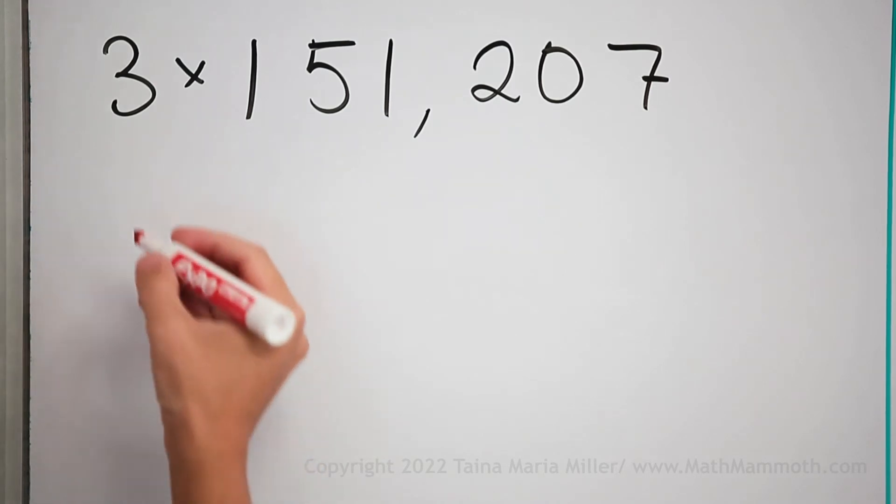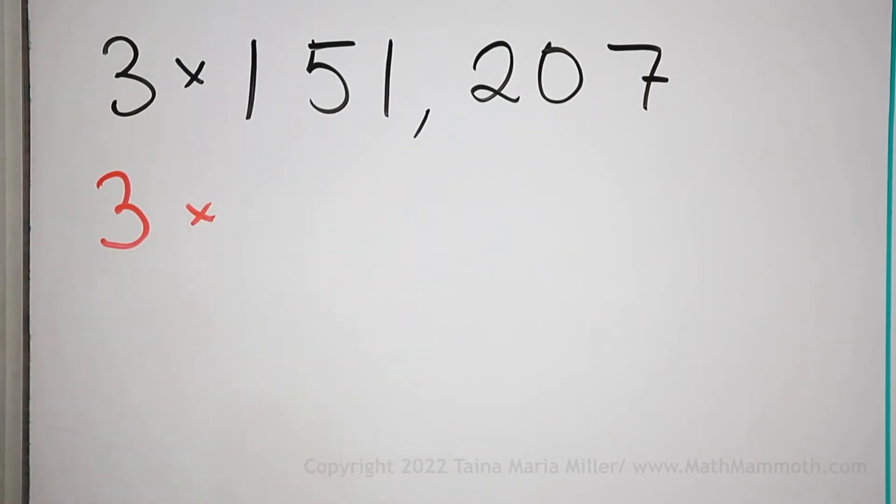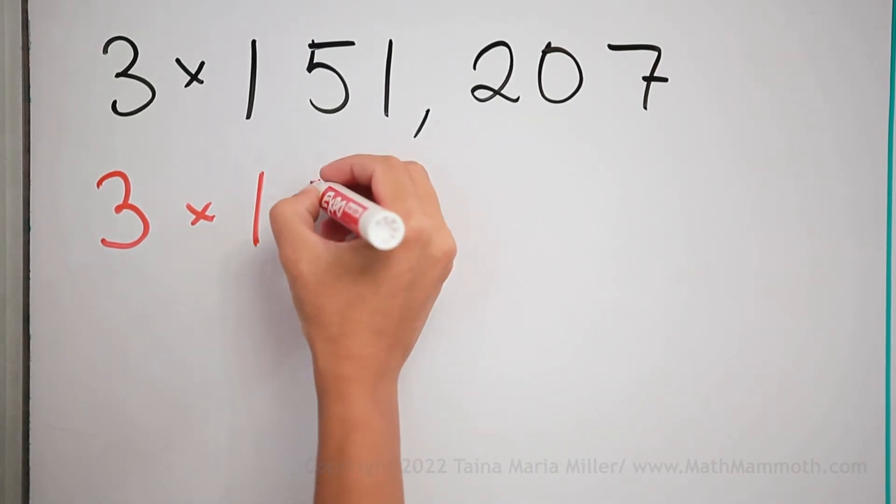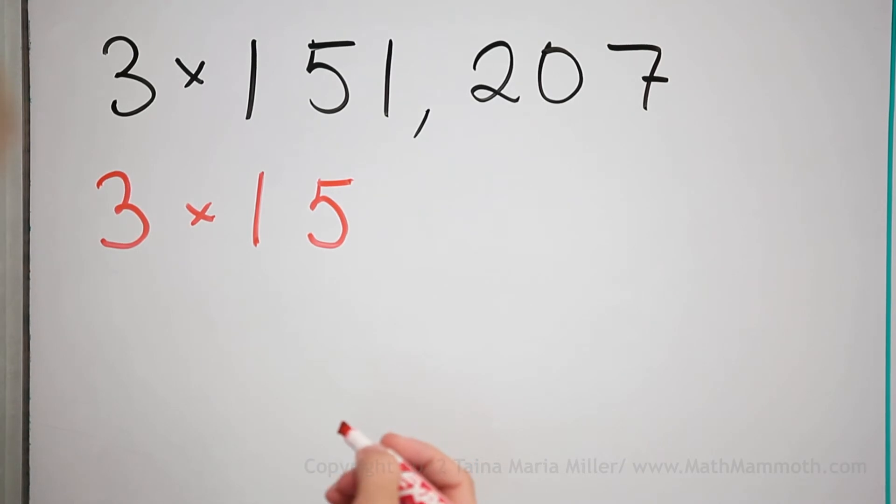And of course, that can be done in various ways depending on your mental multiplication skills. Maybe I will just round it to 150,000 or 151,000 because that really isn't that much more difficult.